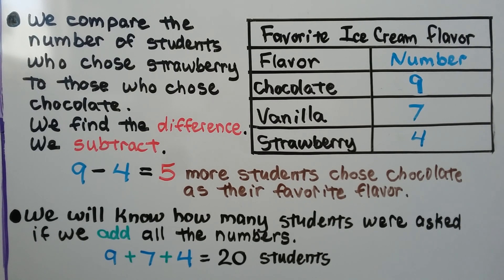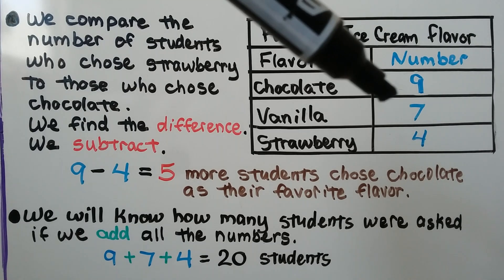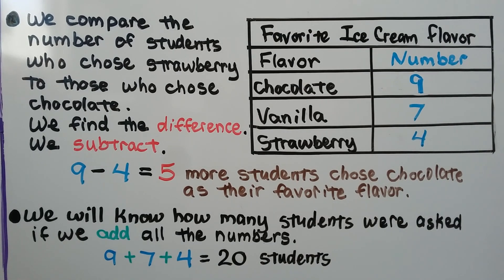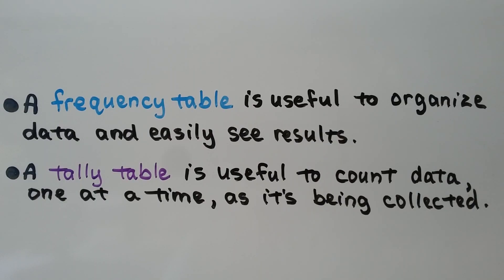We can find how many students were asked by adding all the numbers: nine plus seven plus four tells us the total number of students asked about their favorite ice cream flavor. There were 20 students. A frequency table is useful to organize data and easily see results because we see the numbers. A tally table is useful to count data one at a time as it's being collected.